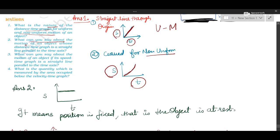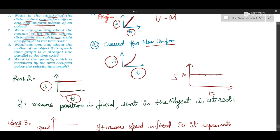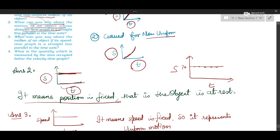Question number 2: what can you say about the motion of an object whose distance-time graph is a straight line parallel to the time axis? If the distance-time graph is parallel to the time axis, the distance is the same everywhere — say 70, 70, 70 — meaning distance is not changing and position is not changing. So the object is at rest. There is no motion.